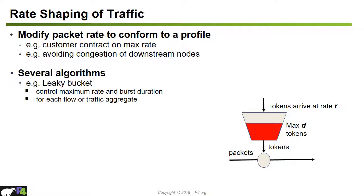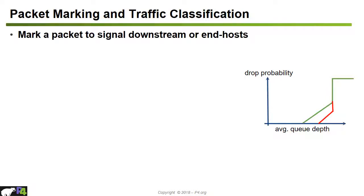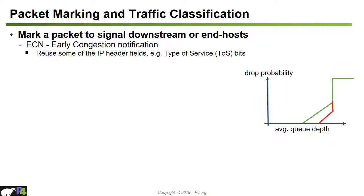The leaky bucket algorithm generates tokens at a certain rate R, and the bucket has a certain depth D. Packets are only forwarded if tokens are available, and tokens are generated regularly at rate R. This allows control of the maximum rate and maximum burst duration. When packets arrive, we can also mark them using early congestion notification (ECN) — reusing IP type-of-service bits to signal to downstream nodes or end hosts that congestion is building up.